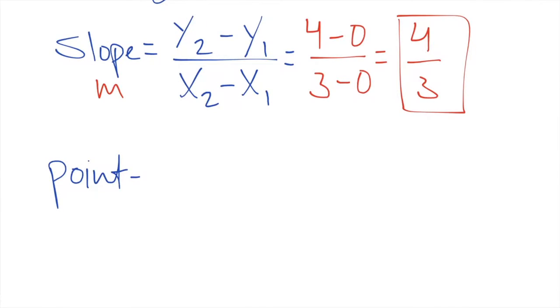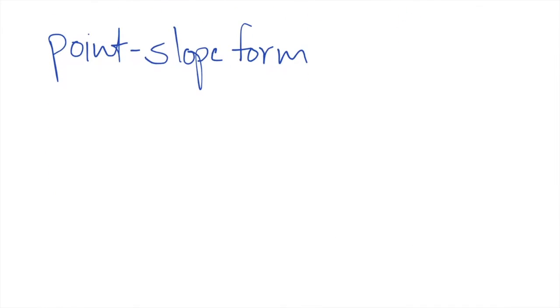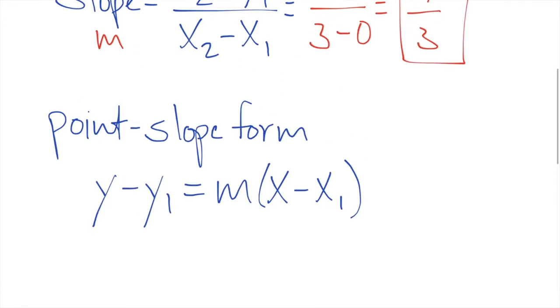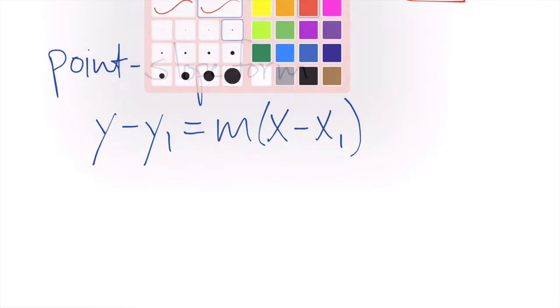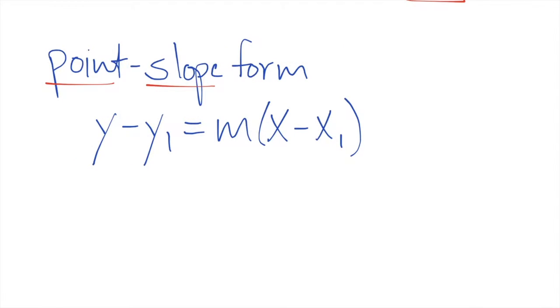Point slope form. And that formula is y minus y₁ equals m times x minus x₁. Now in order to use this formula what you need are two things: you need a point and you need a slope.